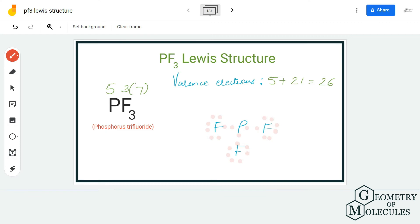So now if you look at this Lewis structure, all the atoms over here have complete octets as they have eight valence electrons in their outer shells. So this is the Lewis structure for phosphorus trifluoride, in which phosphorus forms three single bonds with three fluorine atoms.